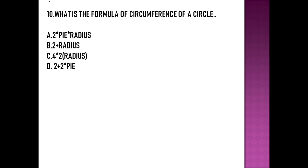The next question asks for the formula for the circumference of a circle. The circumference of a circle is calculated using the formula 2πr, that is 2 times pi times radius. So option A is the right answer.